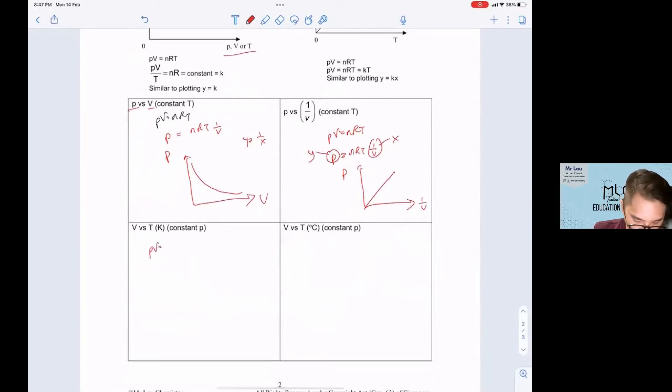Another example: PV equals nRT. They want V as the y-axis. So V on the left-hand side equals nR over P times T. Therefore, V against T will be your straight line cutting through your origin.